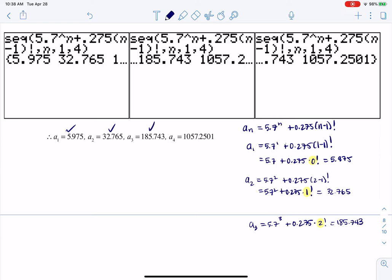I'm going to get 185.743. And since I have some space over here, let's just do a sub 4. That would be 5.7 to the fourth plus 0.275 times 3 factorial. And sure enough, that is 1057.2501. And that's where I'm getting that last number.